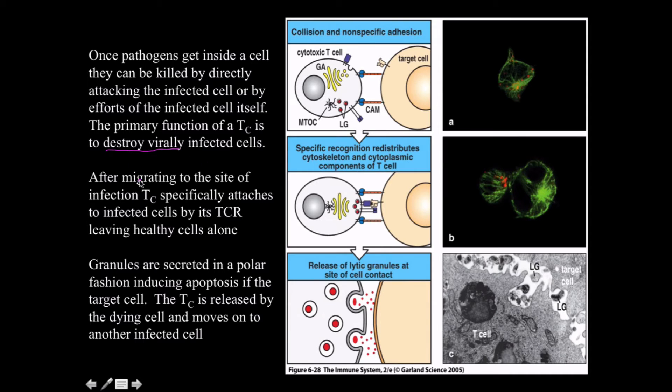Unlike natural killer cells, which have cytotoxins and other types of receptors, the cytotoxic T cell requires just one signal — through its own T cell receptor and the co-receptor. That interaction alone is what the cytotoxic T cell uses to decide whether or not a host cell needs to die.